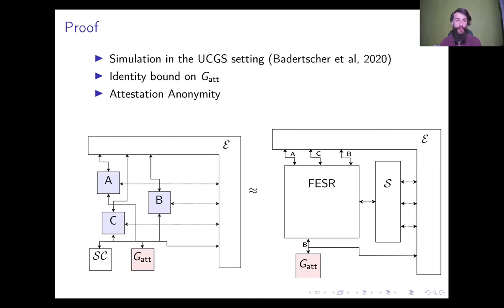The proof is in the UC with global subroutine setting, an extension over modern UC, which includes global subroutines as part of a plain UC protocol. As with all UC proofs, we're trying to construct a simulator in the ideal world on the right-hand side, which can convince the environment that is communicating with the protocol on the left-hand side in the real world, whereas it's actually just communicating with the ideal functionality. Because of the addition of the global attestation global subroutine, we have to set an entity bound on which parties can communicate with the GATT functionality. In particular, in the challenge session, we only allow an adversarially corrupted party to communicate with GATT. In our case, this is limited to Bob. This allows us to control all communications between GATT and the environment through the simulator.